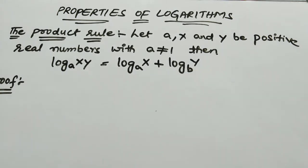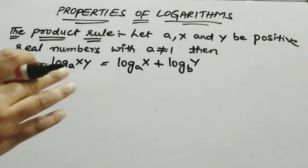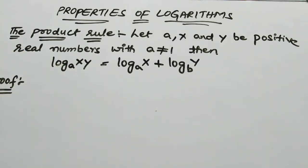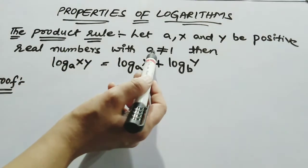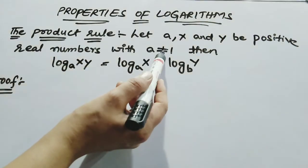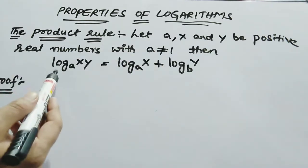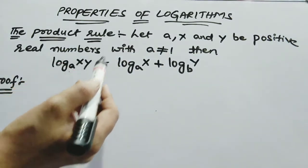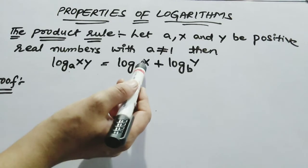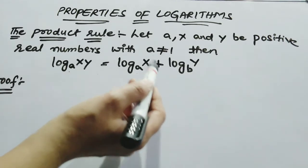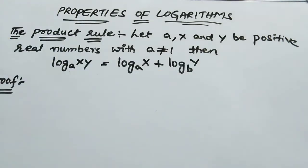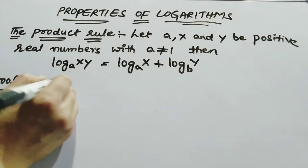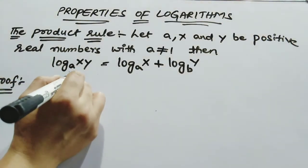The first property is the product rule. Let a, x, and y be positive real numbers with a not equal to 1. Then log(xy) base a is equal to log x base a plus log y base a.